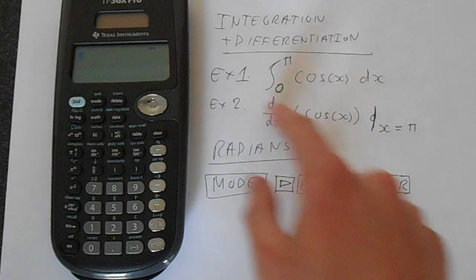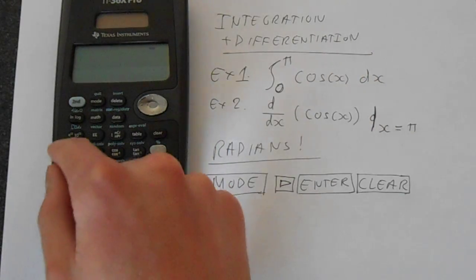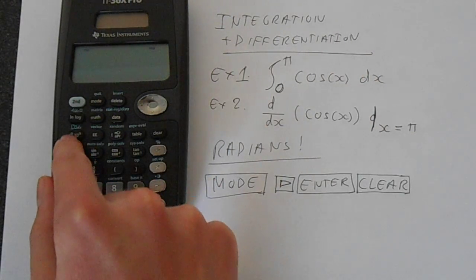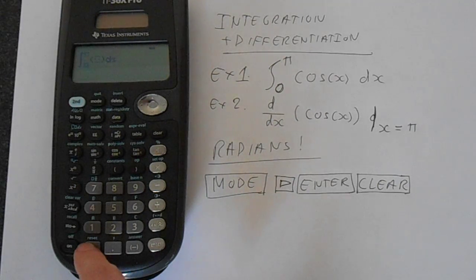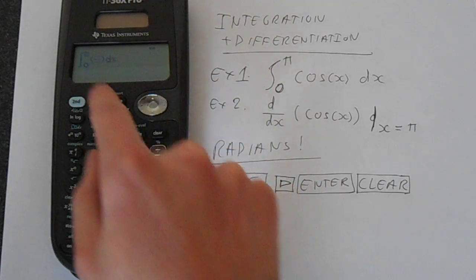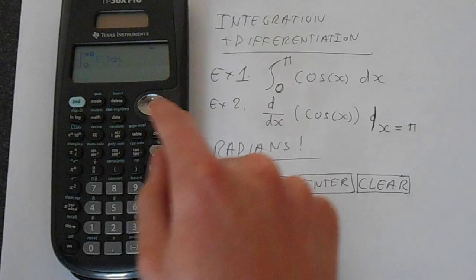Now we can type out the integral just like it looks. Press second function and then down here we've got the integral. We want zero to pi. Use the arrow keys to move around.